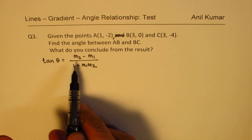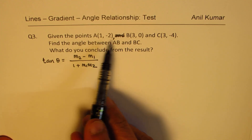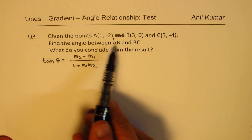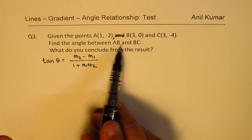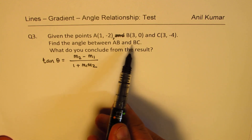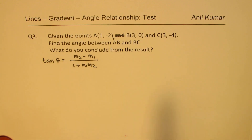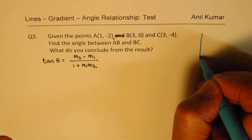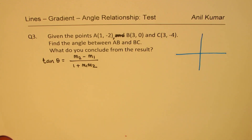Now M1 and M2 are slopes of two different lines. In this case, the lines are AB and BC, with B being a common point. Let me just sketch them here on the side to give you an idea.